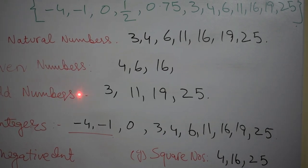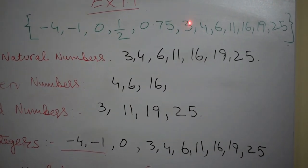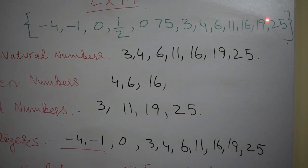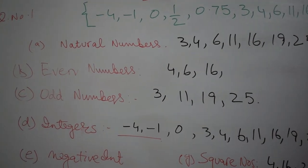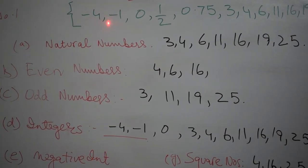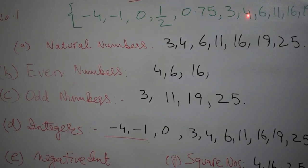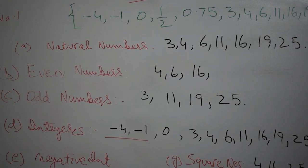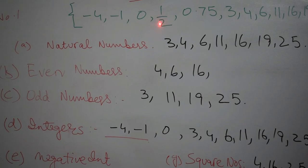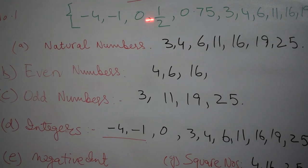Then comes the odd numbers. There are 3, 11, 19 and 25. You can see in the example that these are 3, 11, 19 and 25. Then come integers. Integers are minus 4, minus 1, 0, 3, 4, 6, 11, 16, 19 and 25. In fact, except the two fractions that are written here, which are 1 by 2 and 0.75, all are integers.